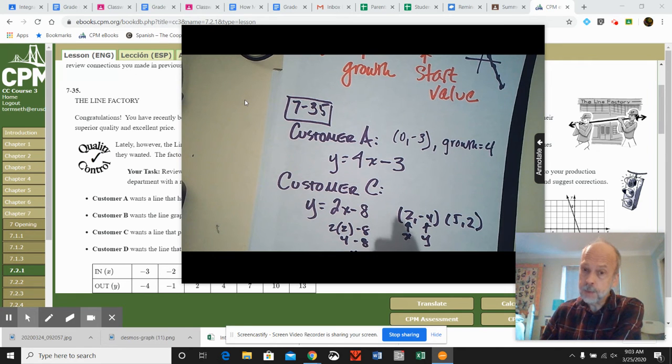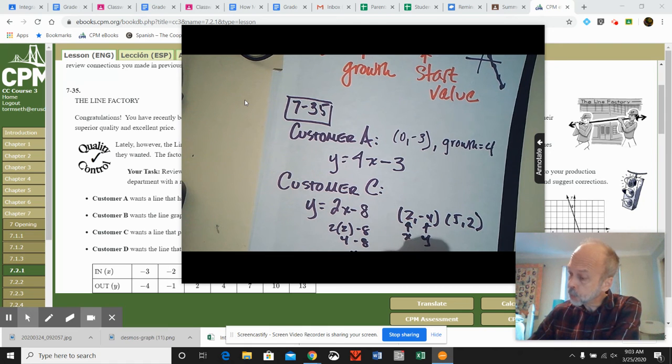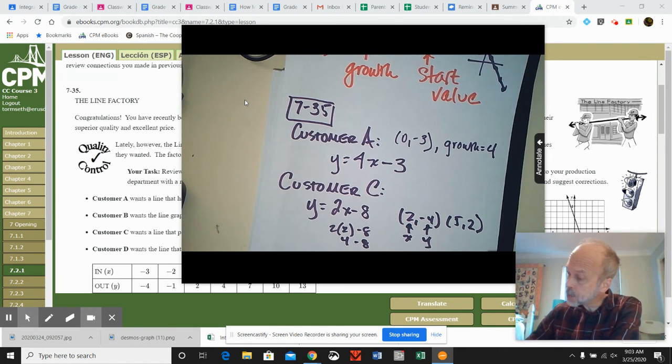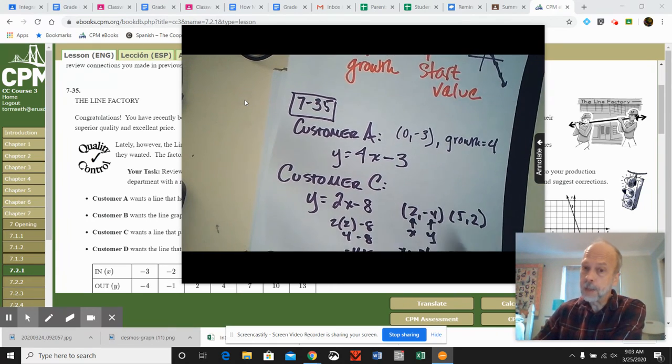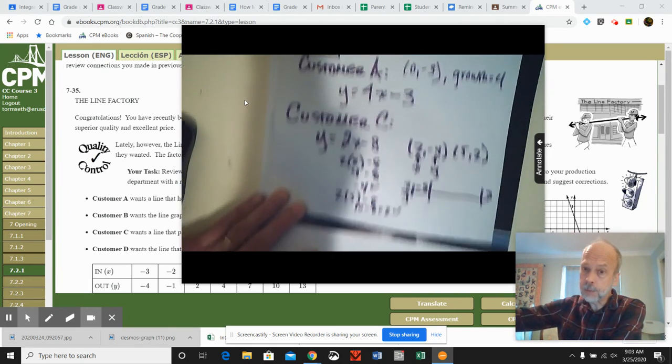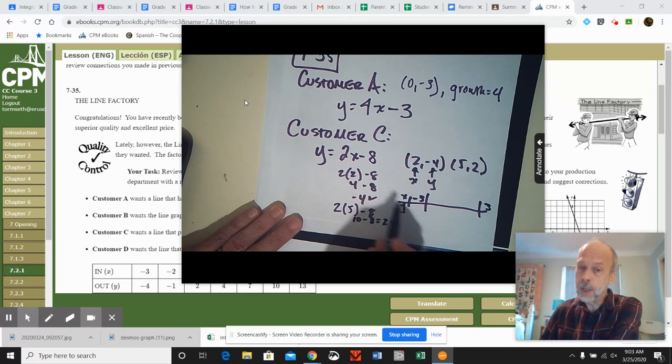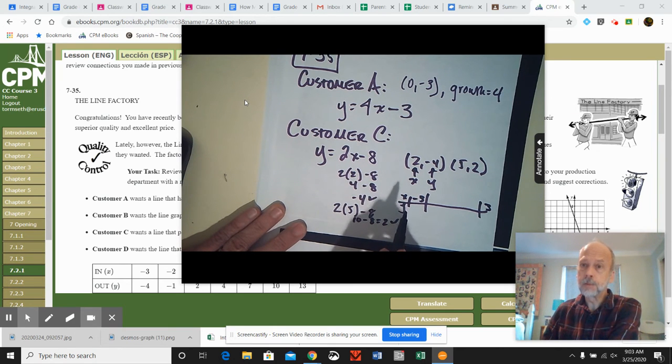And that means in your composition book, go ahead and create a table of values. Remember, it should run from negative 3 to positive 3. And then make the graph to go with it. And that's what you would complete for customer C.